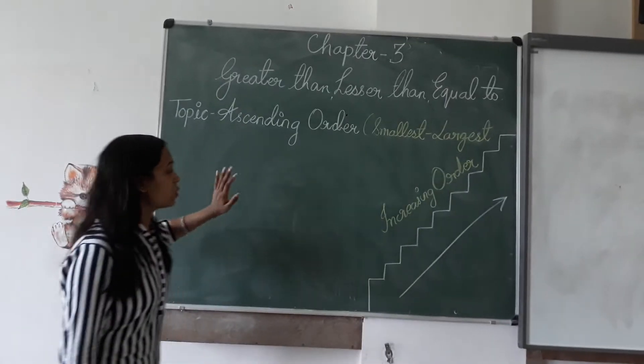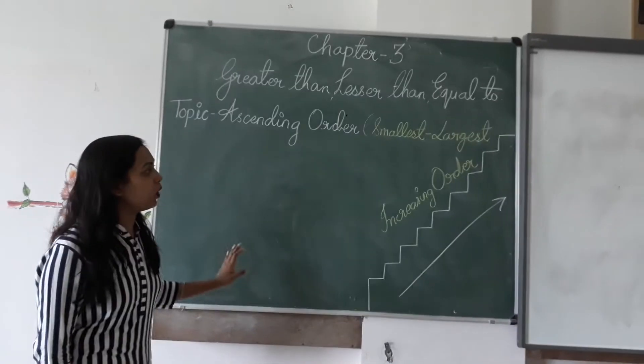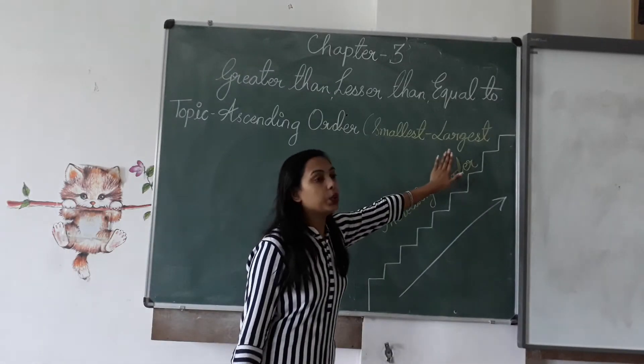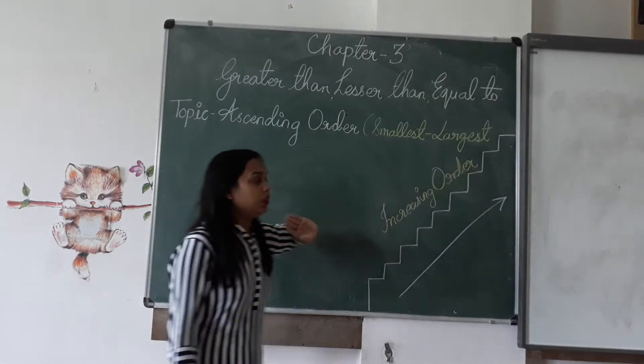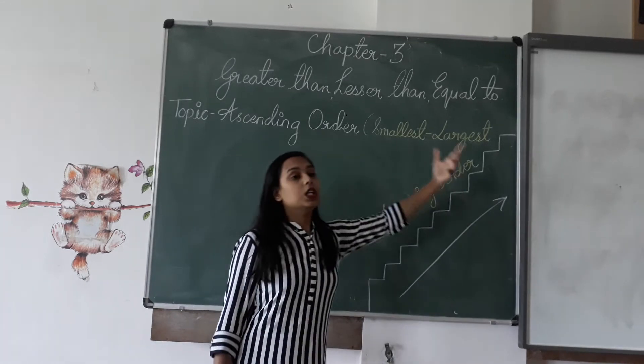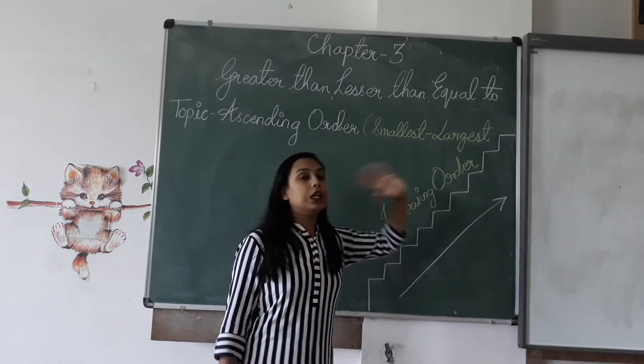In this, today's topic will be ascending order. What is the meaning of ascending order? From smallest to larger — smallest to greater.